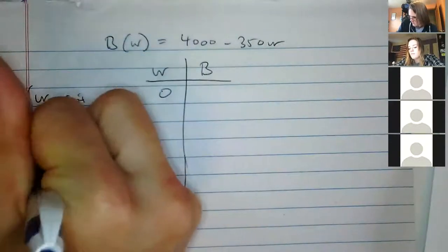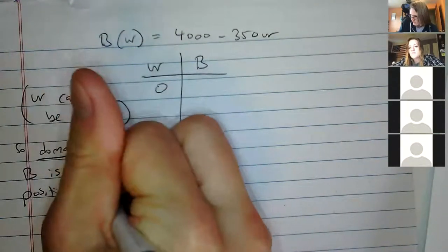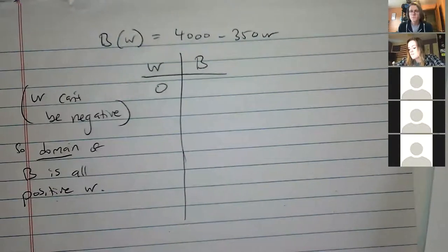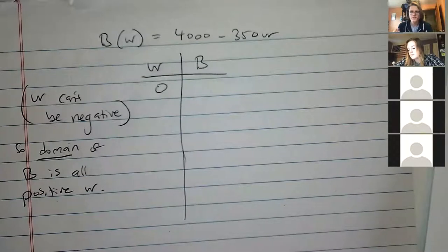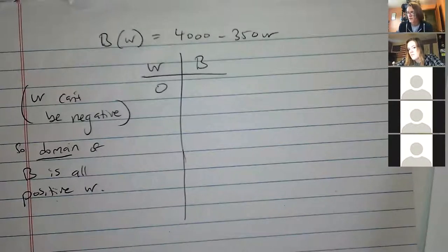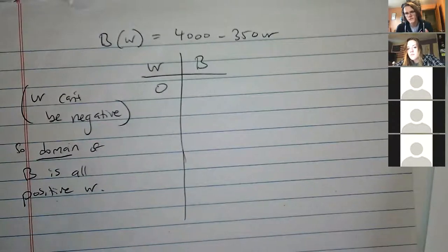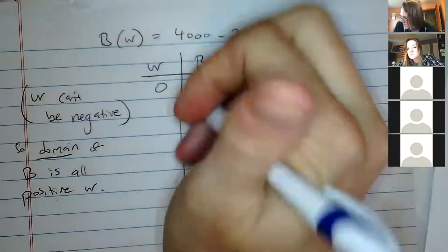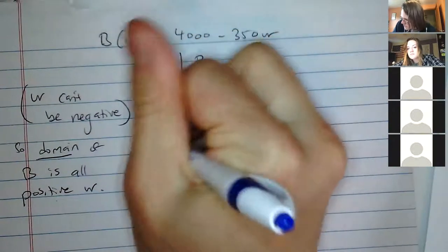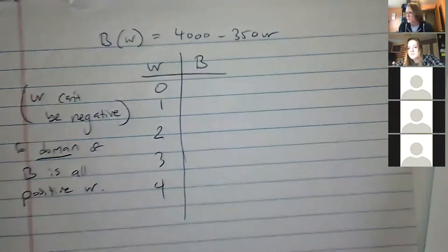The domain is all the values you can plug into a function; the range is everything the function outputs. This is a side point, but in a lot of these modeling problems the domain is restricted because certain values don't make sense in context. Anyway, let's just plug in some points: 0, 1, 2, 3, 4, and we'll see what happens.